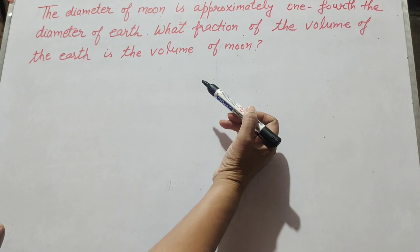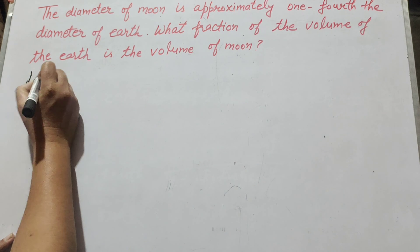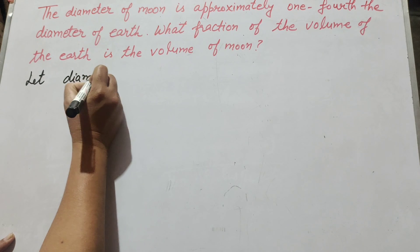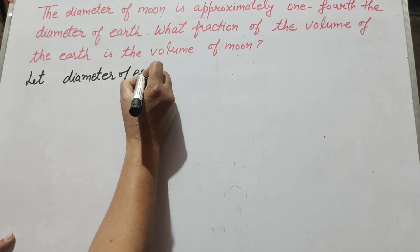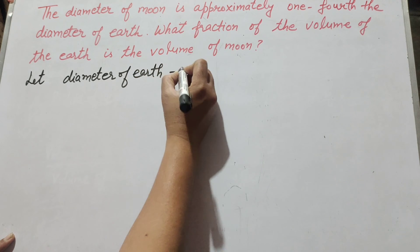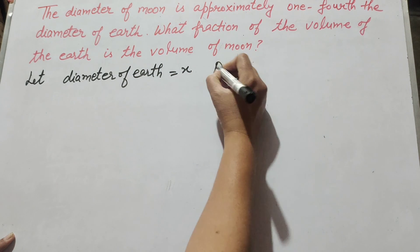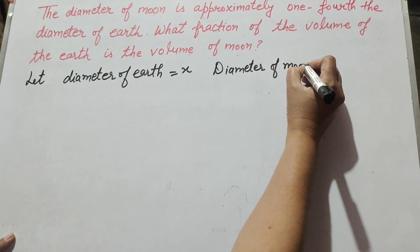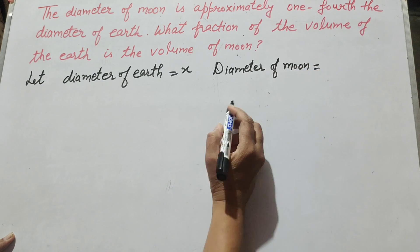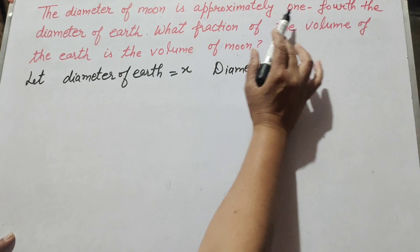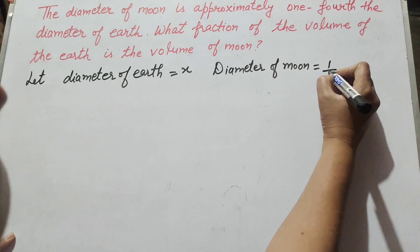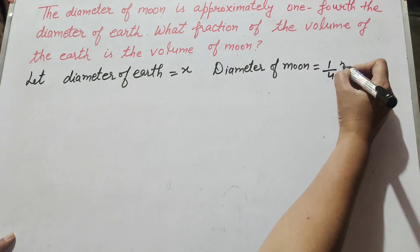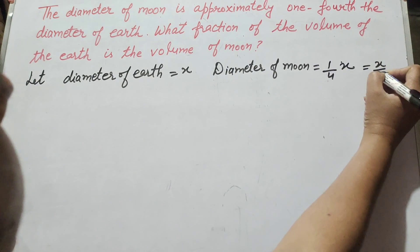Suppose we let the diameter of earth equal to x. The diameter of moon is given as one-fourth the diameter of earth, and since the diameter of earth is x, the diameter of moon is equal to x over 4.